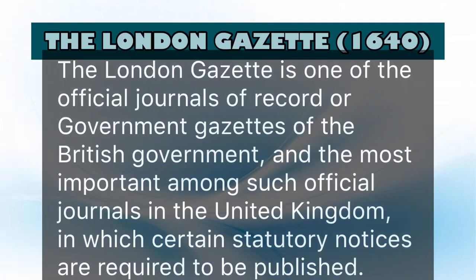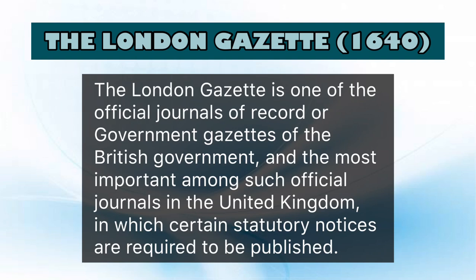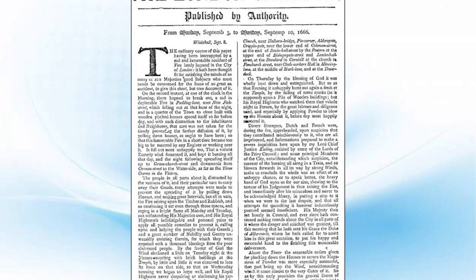Next, we have the London Gazette. The London Gazette is one of the official journals of record of the British government, and it is the most important among such official journals in the United Kingdom, in which certain statutory notices are required to be published. The London Gazette claims to be the oldest surviving English newspaper.